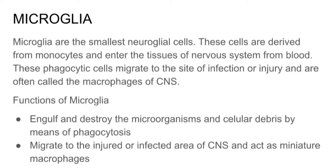Microglia are the smallest neuronal cells. These cells are derived from monocytes and enter the tissue of the nervous system from blood. These phagocytic cells migrate to the site of infection or injury and are often called macrophages of the CNS.